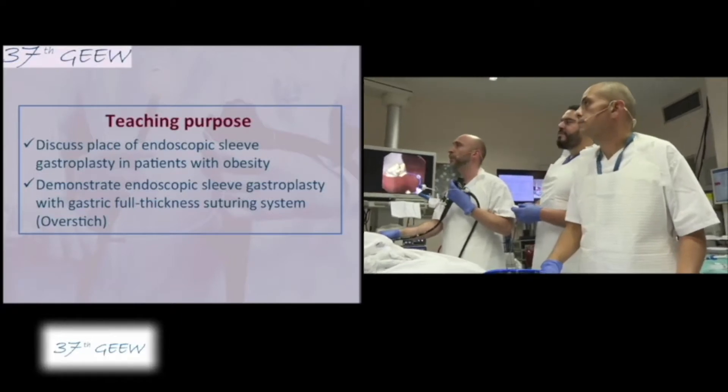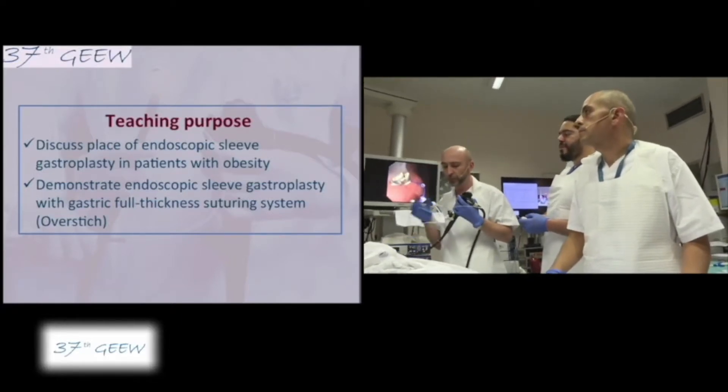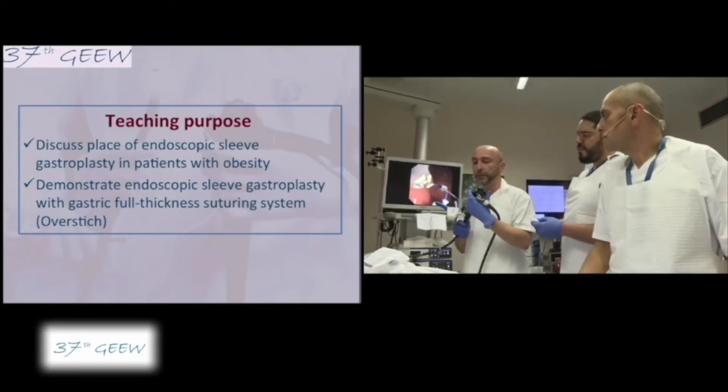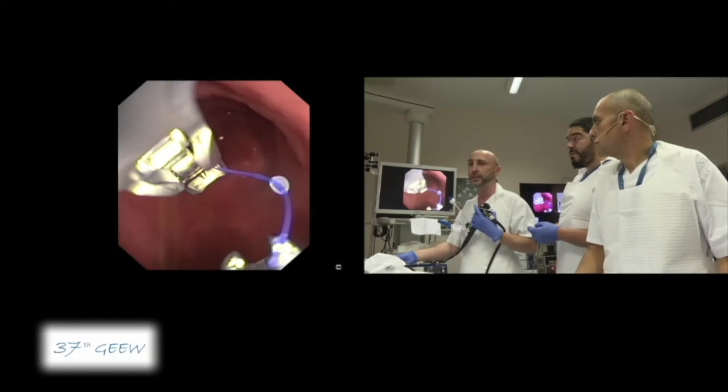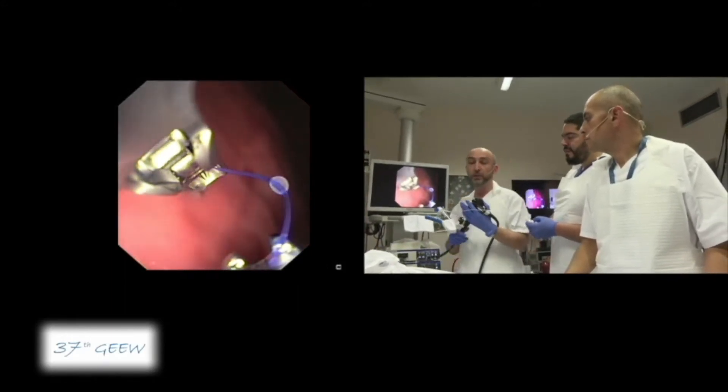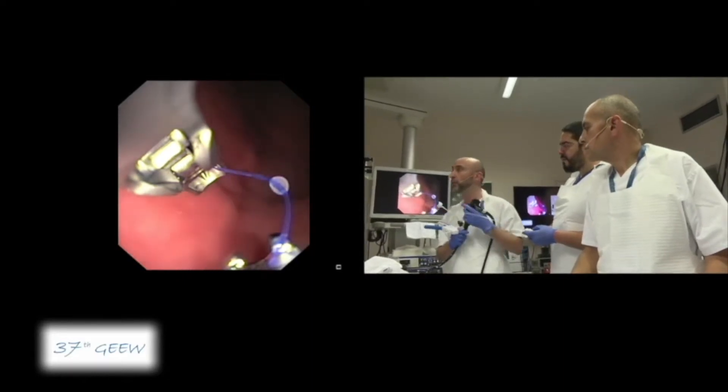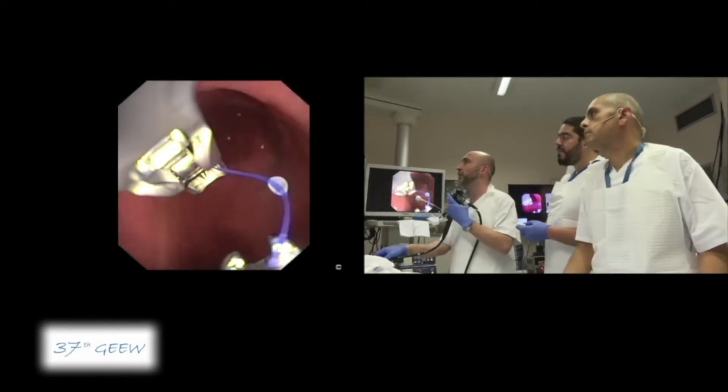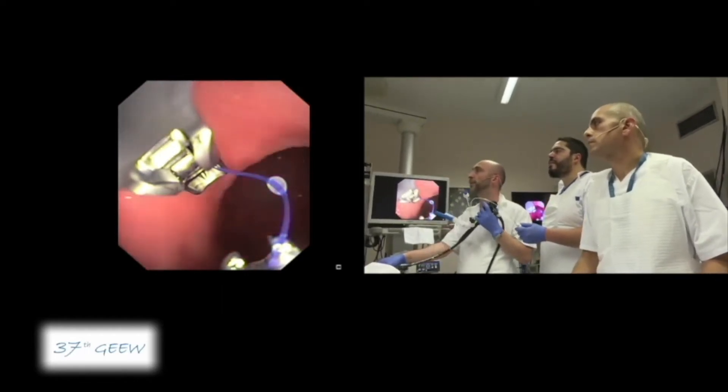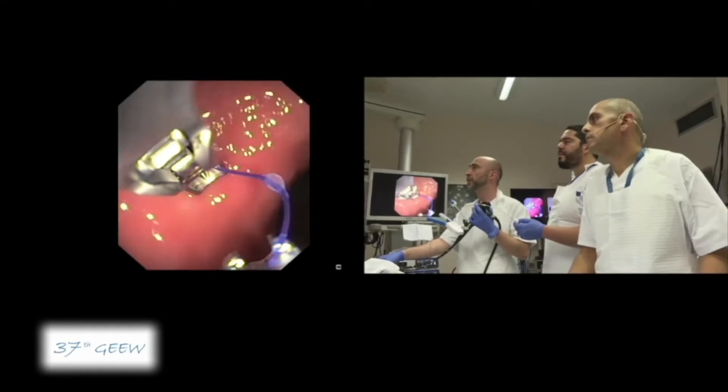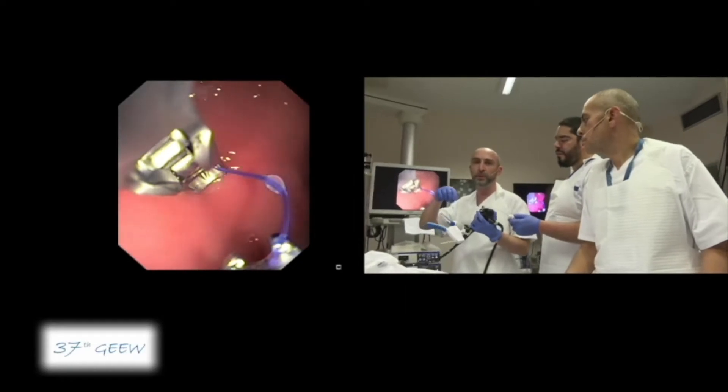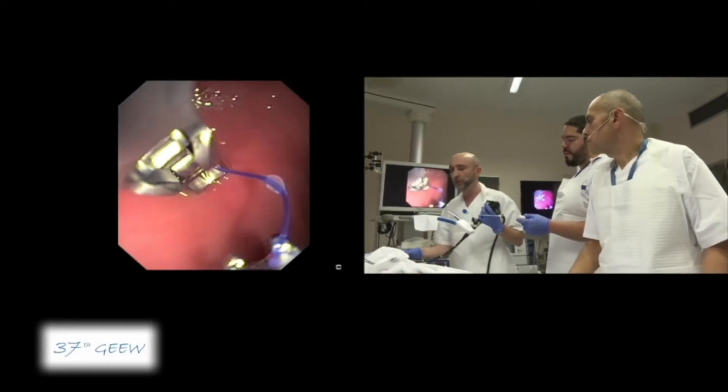We will do the endoscopic sleeve gastroplasty with the polysuture system. We are using a double channel Olympus 160 series endoscope and we have just placed the overtube. Of course we use insufflation with CO2 and you can see here we are well positioned. The pylorus is here in front and here we have the incisura on the angulus. This is the site where we will start and we will use 2.0 polypropylene suture, non-reabsorbable.